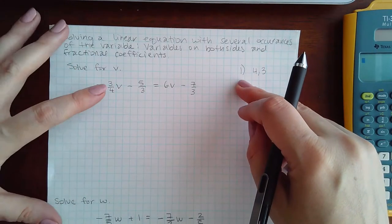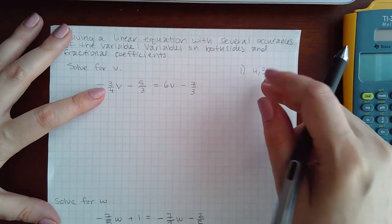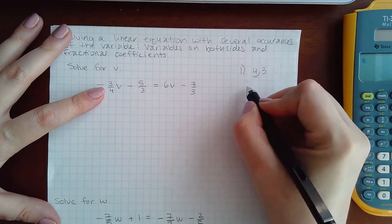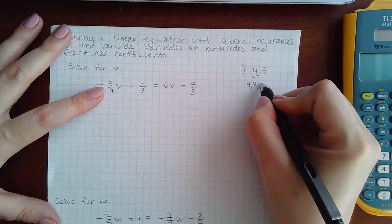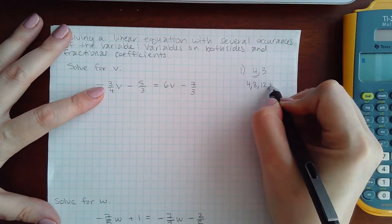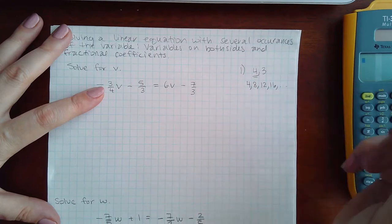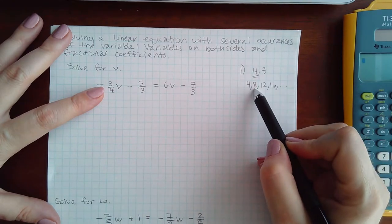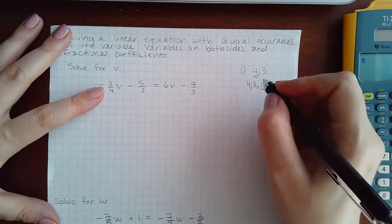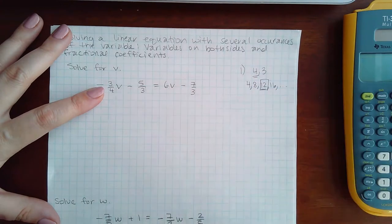Denominators of 4 and 3, we're going to list the multiples of the larger number 4. So 4 times 1, 4 times 2, 4 times 3, 4 times 4. And so 3 does not go into 4 evenly, 3 does not go into 8 evenly, 3 does go into 12 evenly, so 12 will be our common denominator.